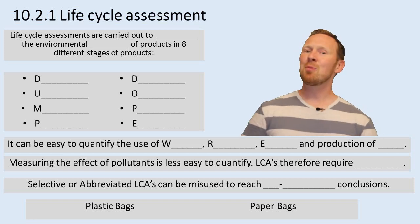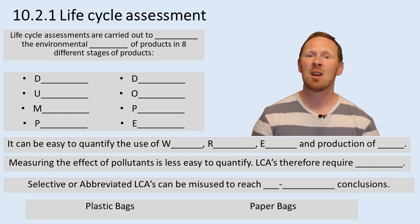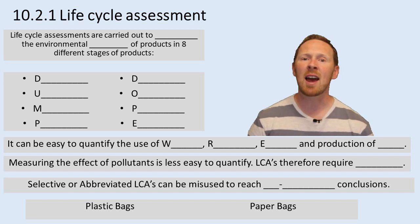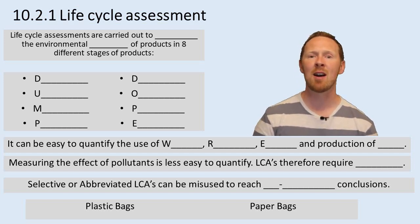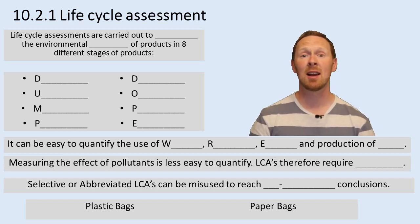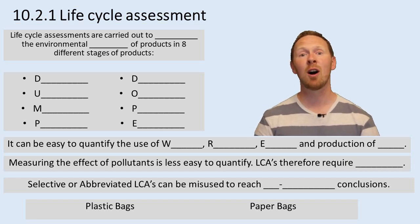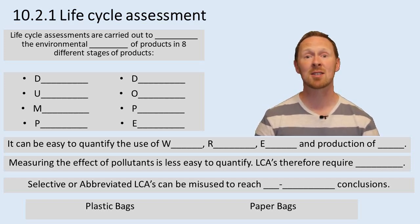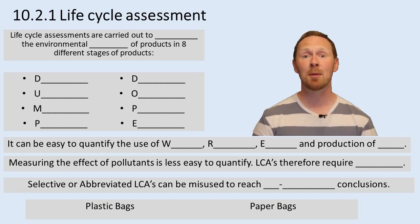There are lots of things to consider, but just break it down: can you look at data and decide which option has the least impact on the environment? Can you argue about different areas that might be included in a Life Cycle Assessment? Could you spot a selective or abbreviated Life Cycle Assessment that has reached a predetermined idea, and would you be able to explain that?